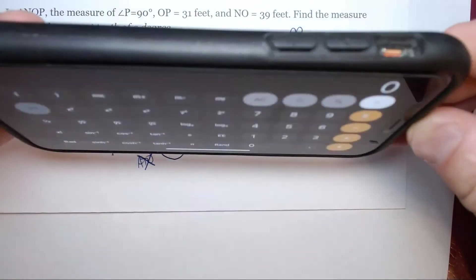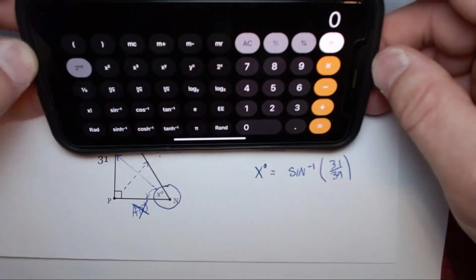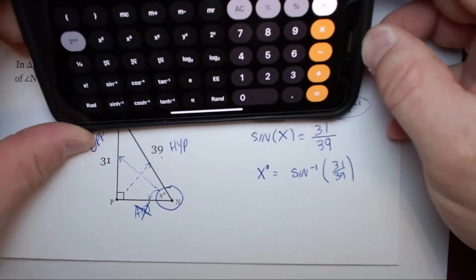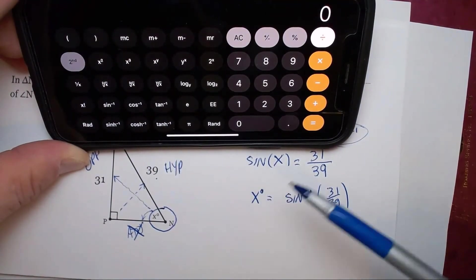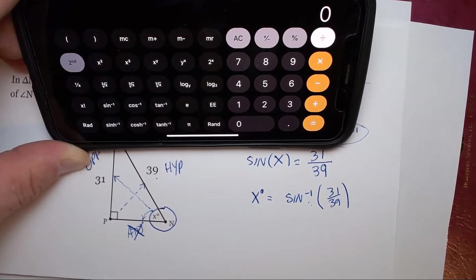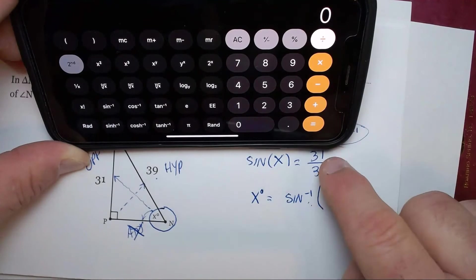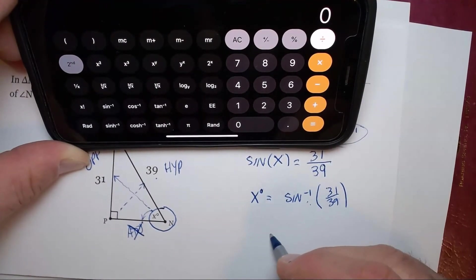Here's my calculator. I'm going to turn it horizontal to get my scientific calculator because it seems like that's what most people are using. Now I want to find inverse sine of 31 over 39, and here's how I put that in. I put in 31 divided by 39. I need to turn this into a decimal first.